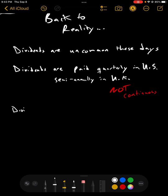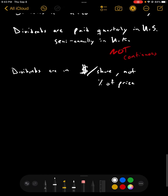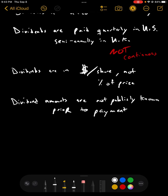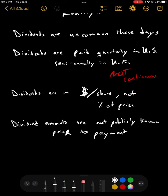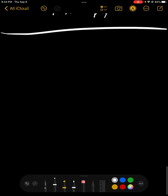And semi-annually in the U.K. And that is pretty far from continuous. Not continuous. Now, dividends are typically, I'm in the U.S., dividends are in dollars per share. Not percent of value or percent of price. And dividend amounts are not publicly known prior to payment. Now, working with this much uncertainty into a model is really complicated. So, it's usually best to take baby steps. And that's what we're going to do. We will, over time, work our way up to more sophisticated and powerful models. But right now, we are going to take baby steps.